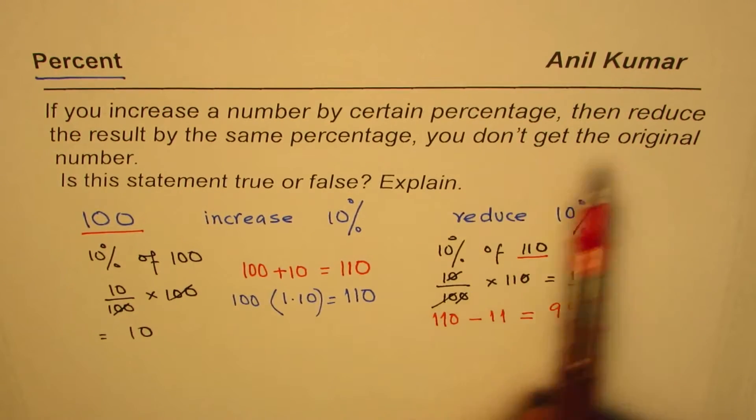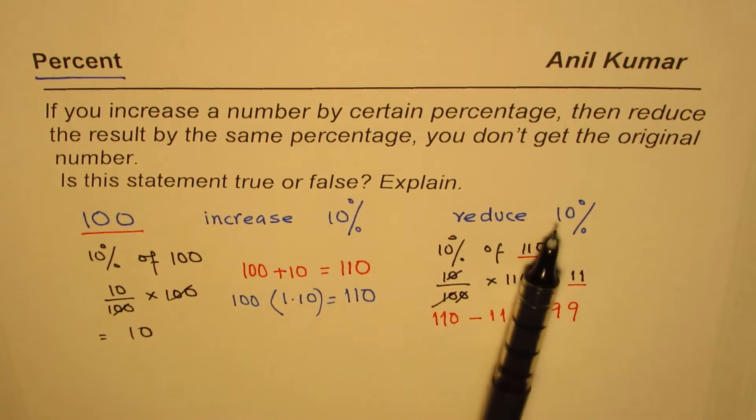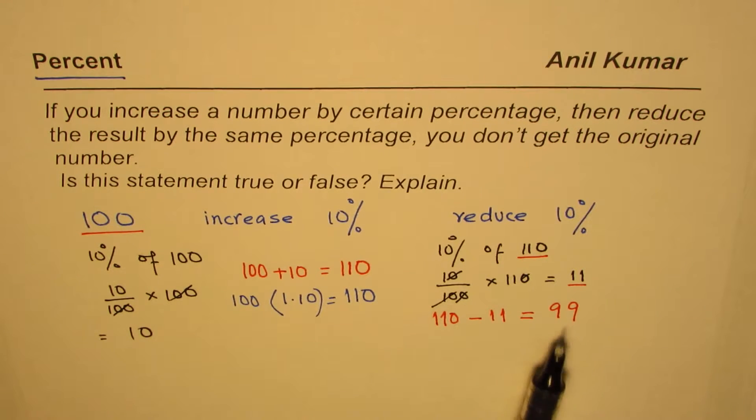So you don't get the original number. You get one less. If you increase by 10 percent and reduce the same result by 10 percent, you get a different number. The statement is—can I say—always true.